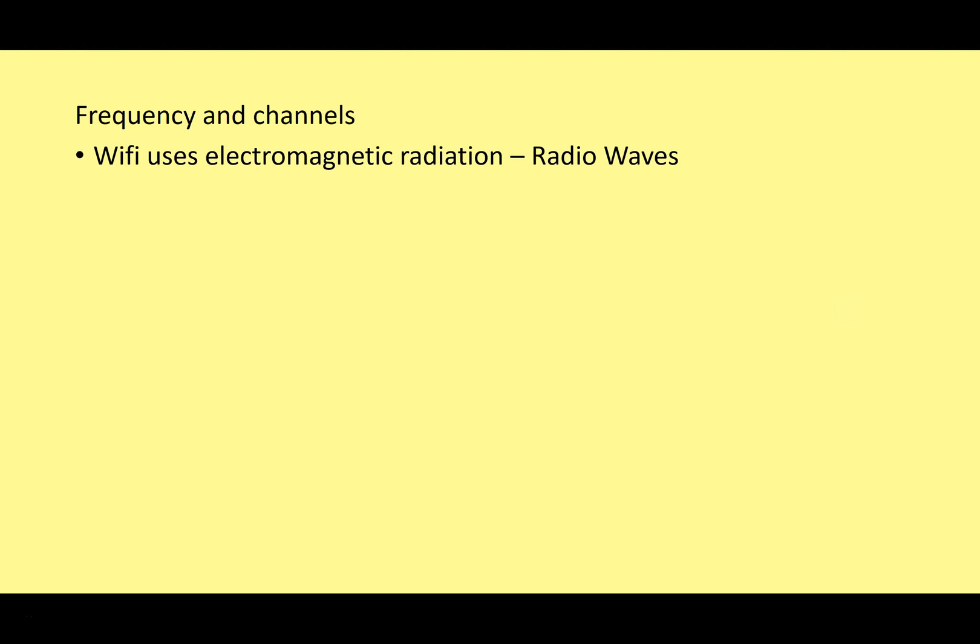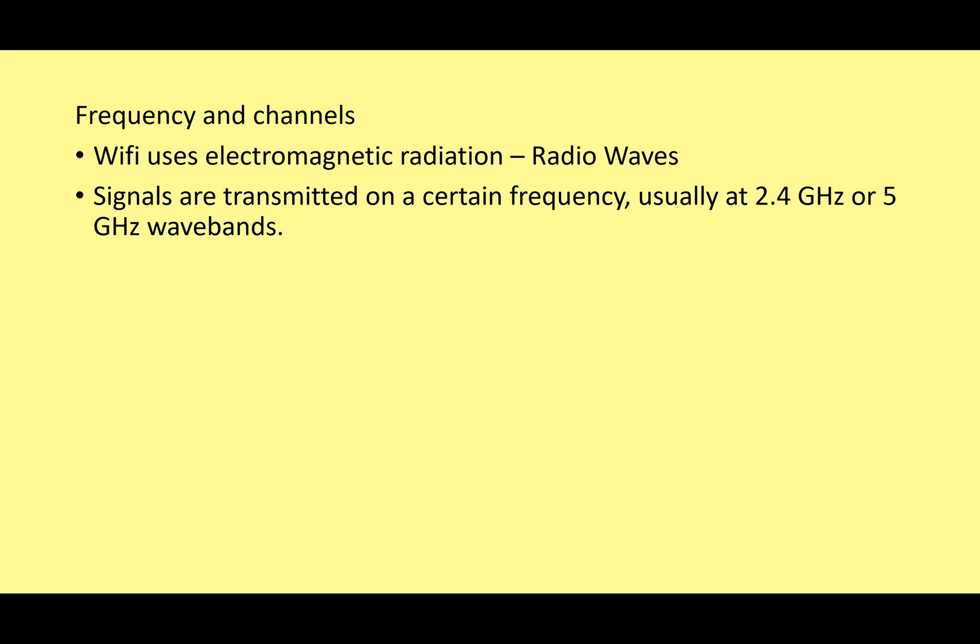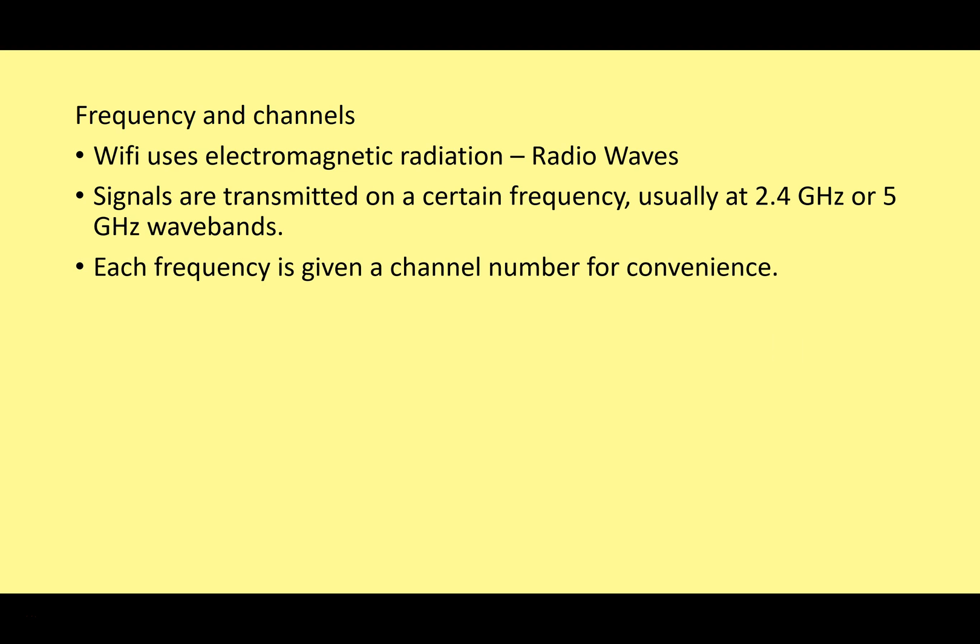Let's get a bit more technical and look at frequency and channels. Wi-Fi uses electromagnetic radiation — specifically the part of the electromagnetic spectrum we call radio waves. Signals are transmitted on a certain frequency, usually around the 2.4 gigahertz and 5 gigahertz wavebands, and that's true in most countries around the world.